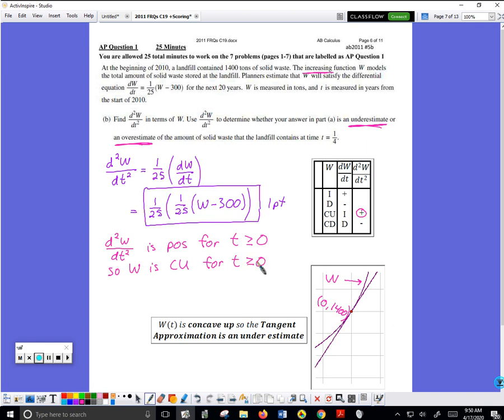Then you can simply copy this statement off of the back of the golden notes: since W(t) is concave up, the tangent approximation is an underestimate. So you'd have to have both of these.